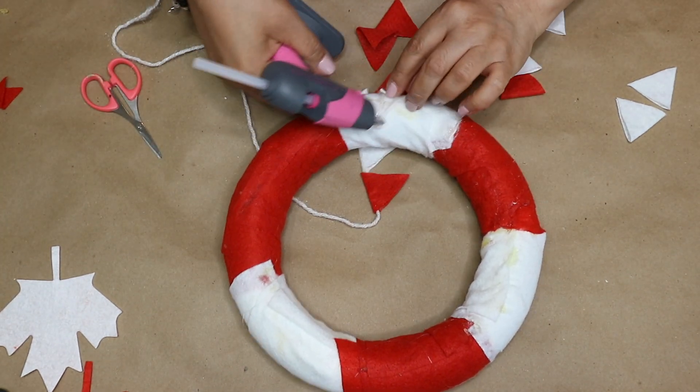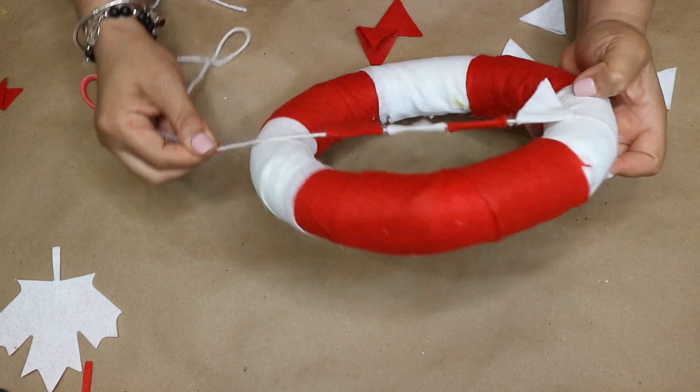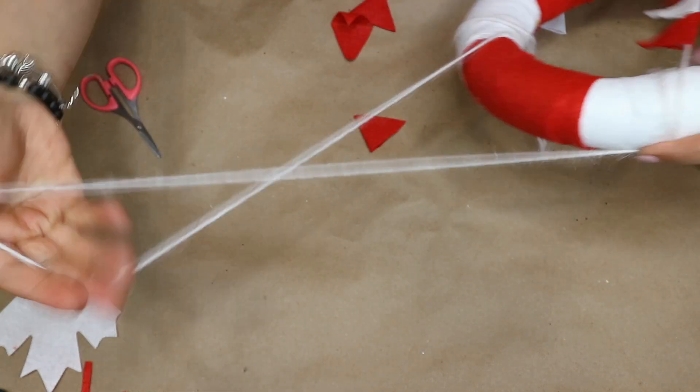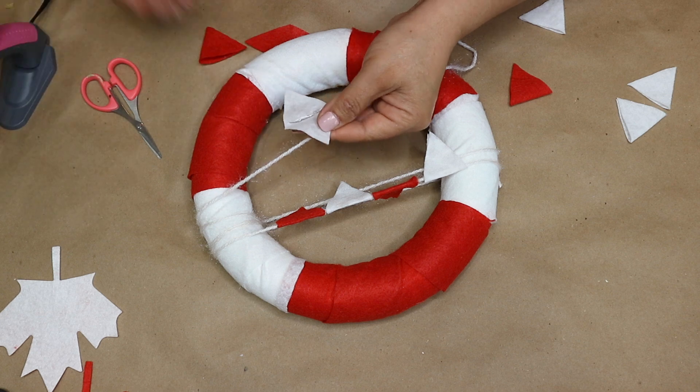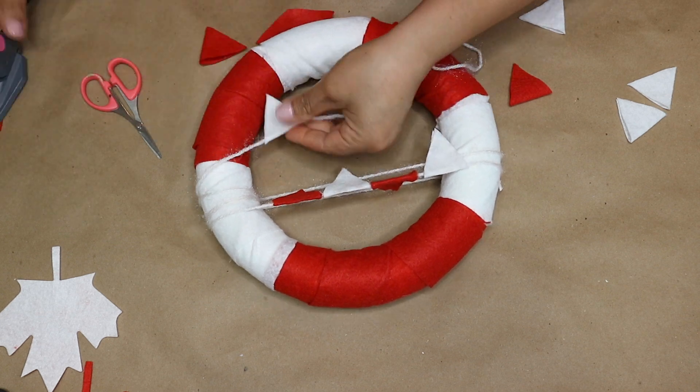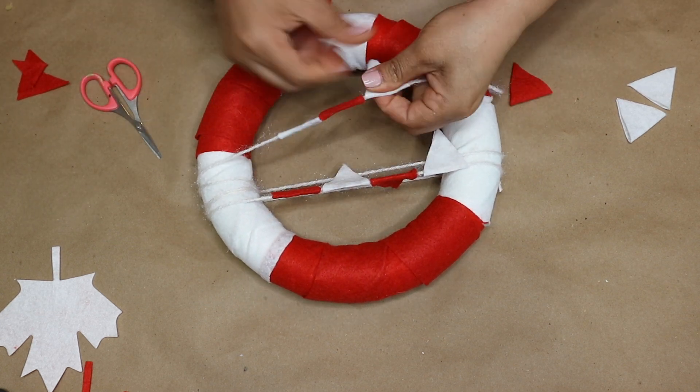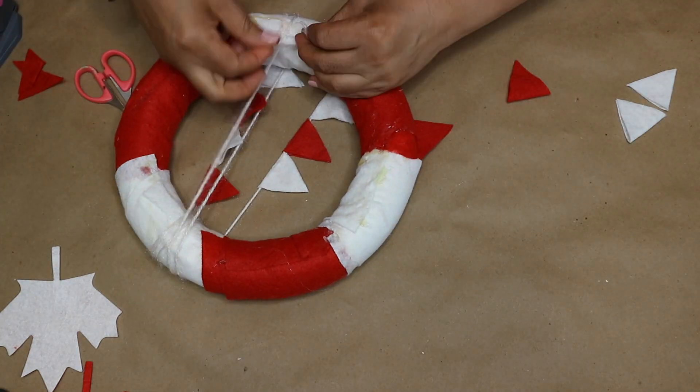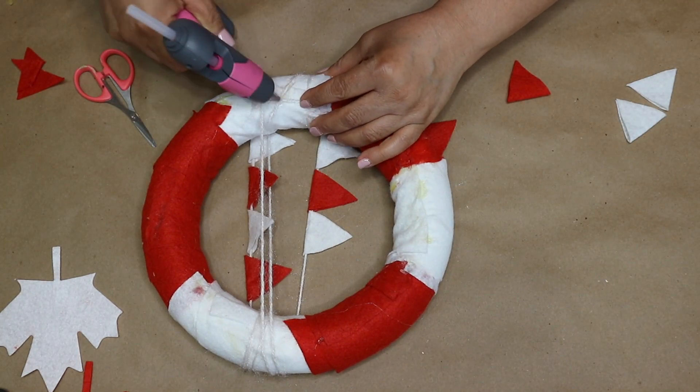And then I tie the yarn on the wreath, then wrap it across the wreath a couple of times. Then I hot glue some more banners on the yarn to have two rows. Then I secure the end of the yarn on the wreath.